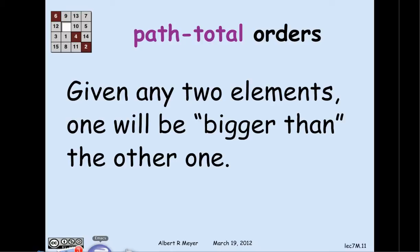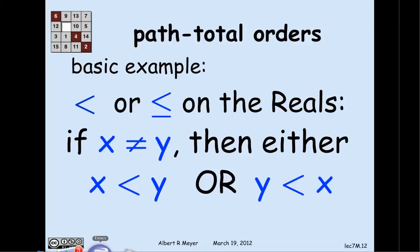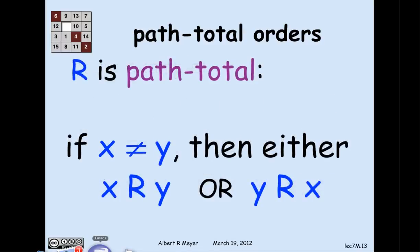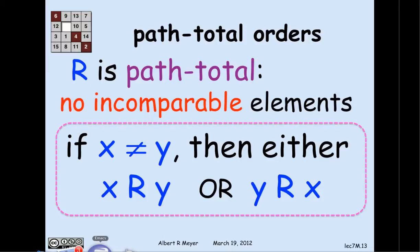Another important property of partial orders is the idea of being path total, or linear as some authors call it. The definition of path total is that given any two elements, one is going to be bigger than the other with respect to the relation. The most familiar example is the less-than relation on the reals: given any two distinct real numbers x and y, either x is less than y or y is less than x. Formally: if x is not equal to y, then either x R y or y R x. A relation with that property is called path total, highlighted with a magenta box.